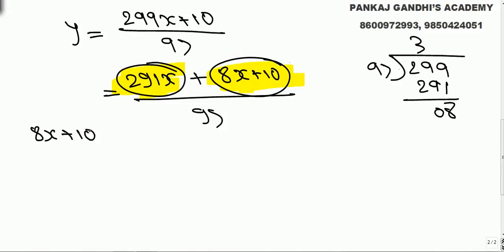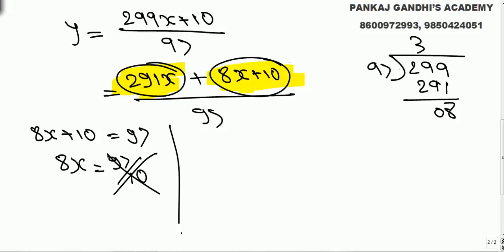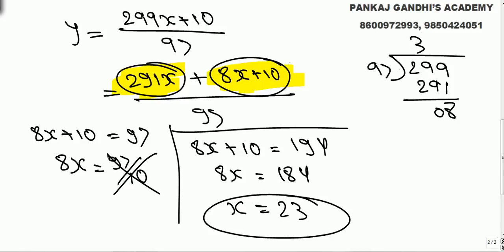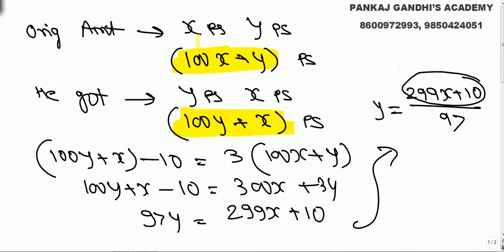If 8x + 10 = 97, then 8x = 87, which gives x in decimal — not valid. So the next multiple of 97 after 97 is 194. Then 8x = 184, giving x = 23. Luckily it works out perfectly.